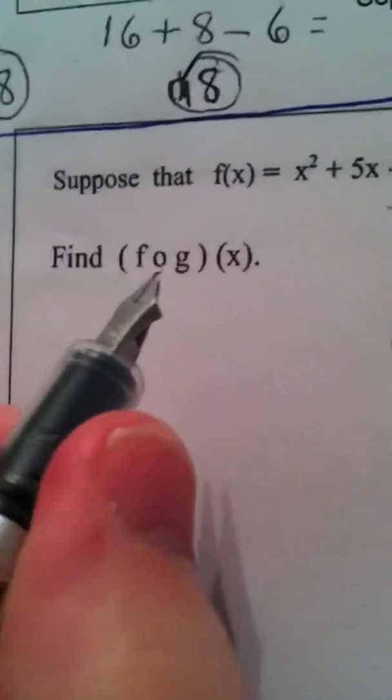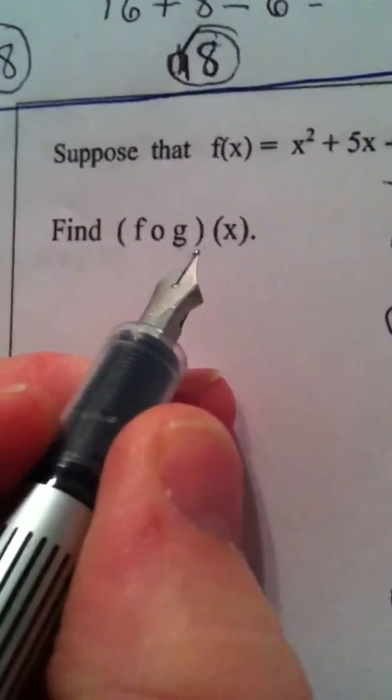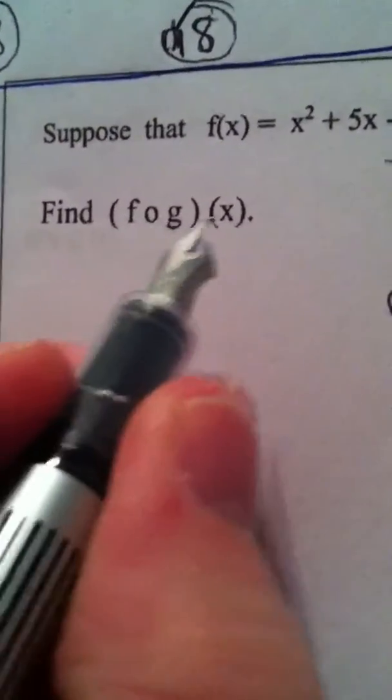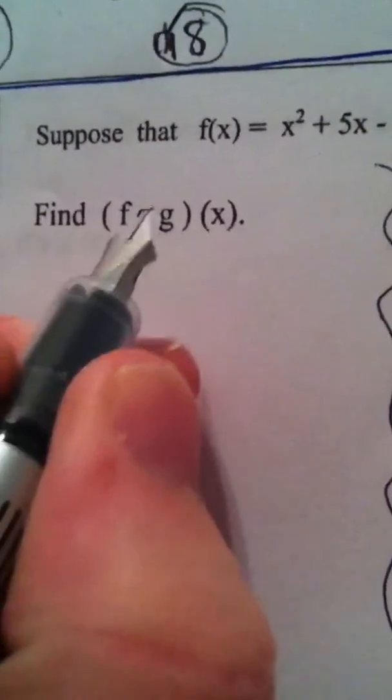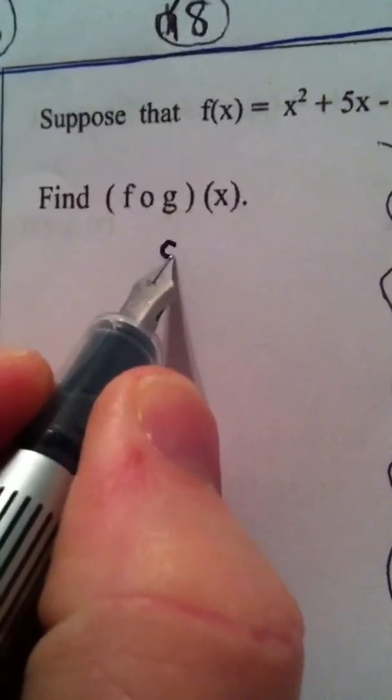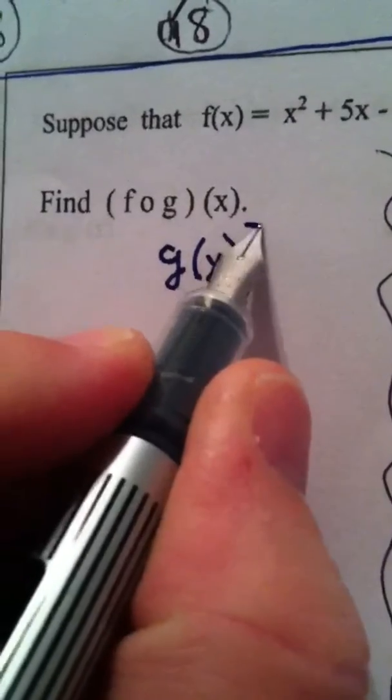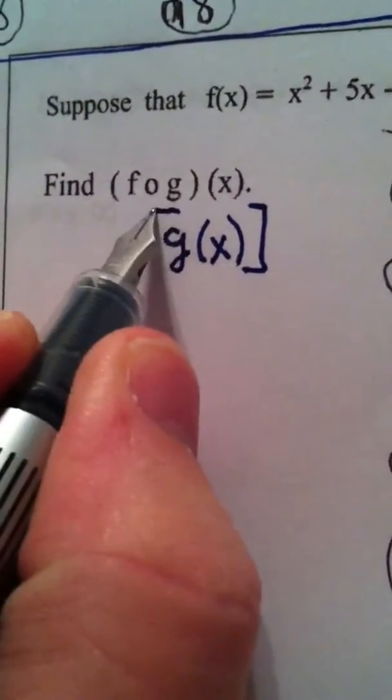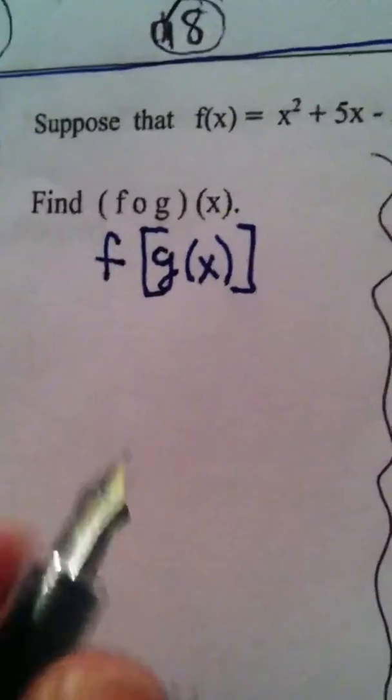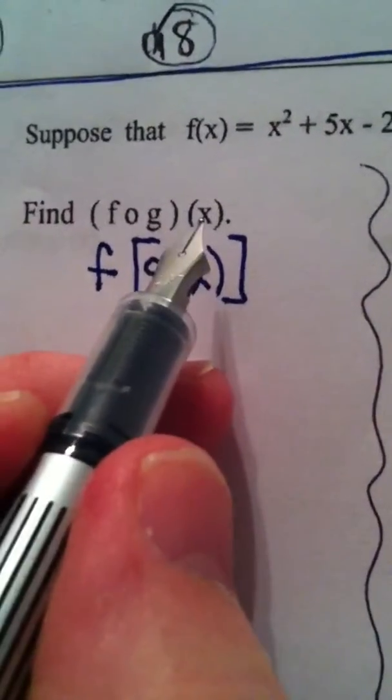First thing we're asked to do is to find f composed with g of x. So, we take x and we put it into g, and then that answer is going to go into f. So, we take x and plug it into g.